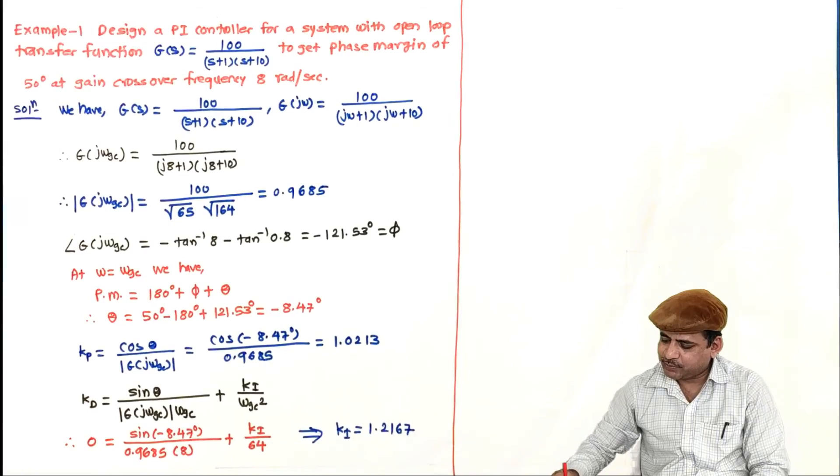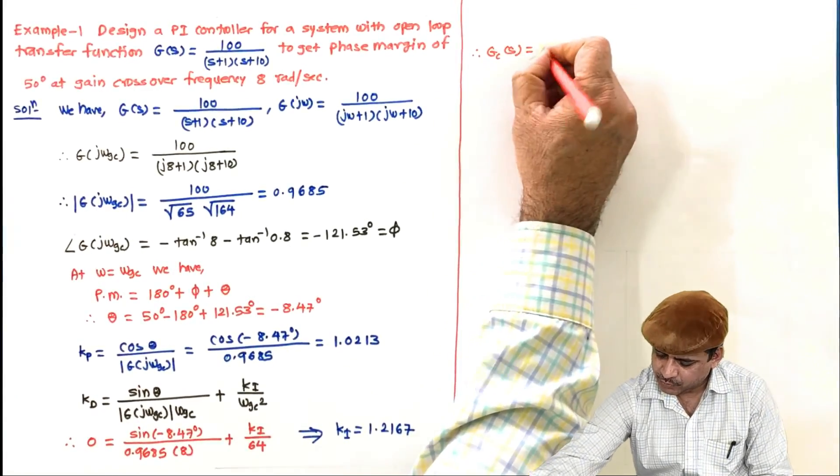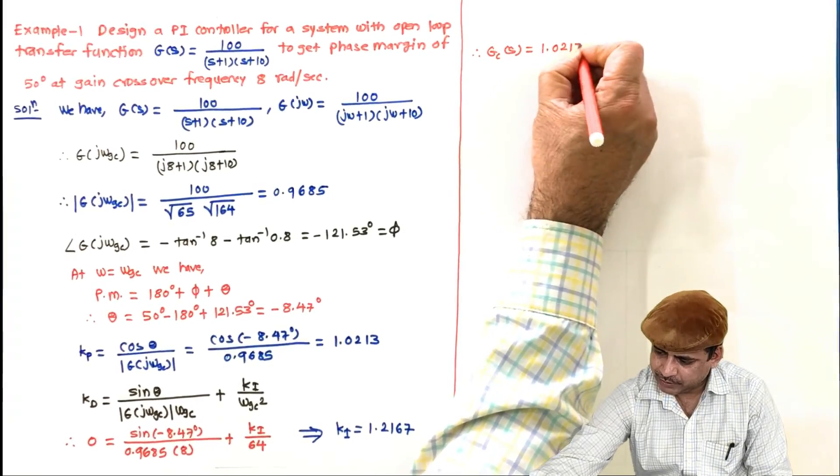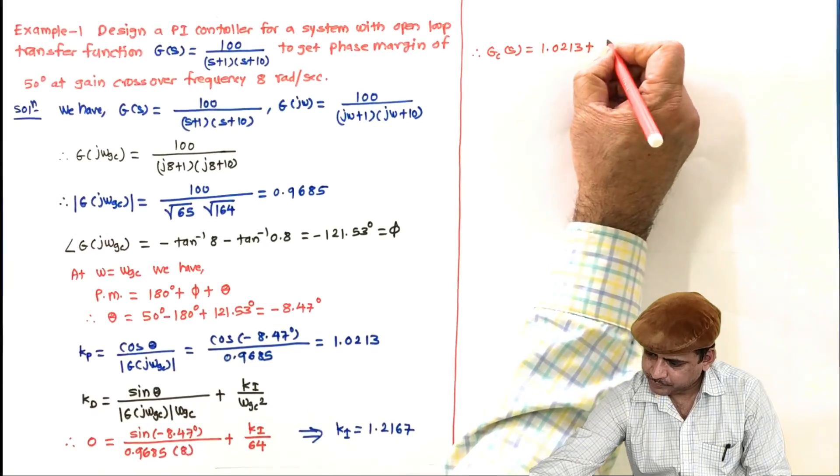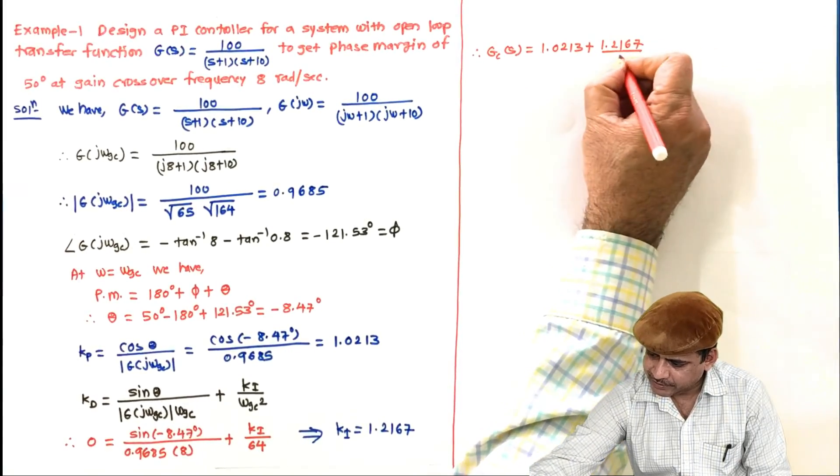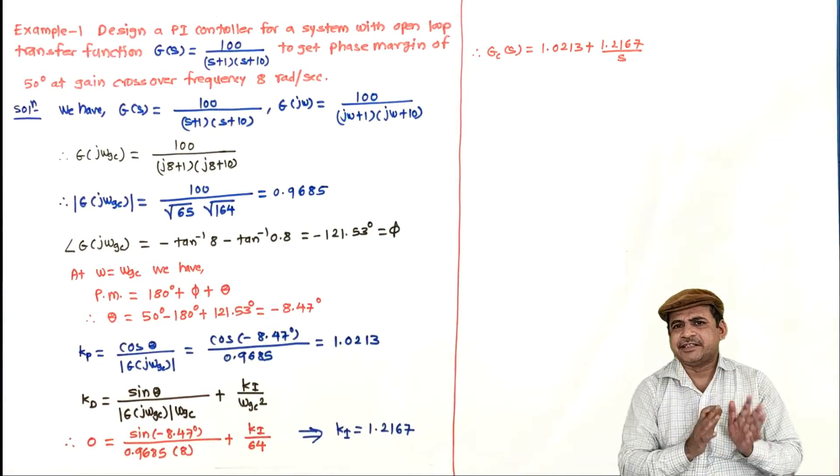And hence the design is complete. Let us write down its transfer function. Transfer function is Gc(s) equals Kp plus Ki/s, that is 1.0213 plus 1.2167 divided by s. It is in the Kp Ki form; just take this common you will get Kc and Ti.